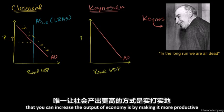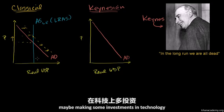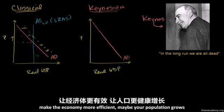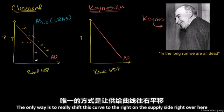The only way to increase the output of the economy in the classical model is by making it more productive — perhaps making investments in technology, making the economy more efficient, or maybe your population grows. So the only way is to really shift the long-run aggregate supply curve to the right, on the supply side.